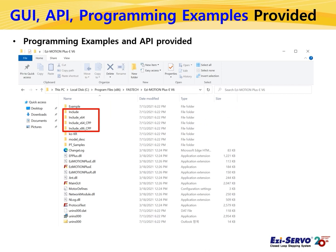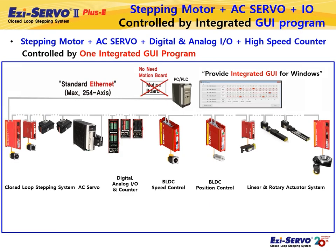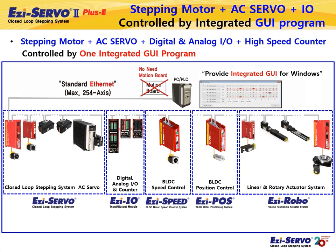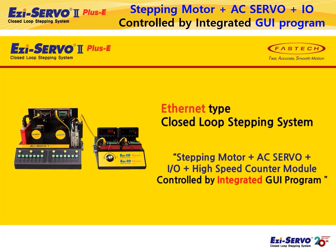For reference, 32-bit API of C Sharp is in the Include folder, 64-bit API of C Sharp is in the Include X64 folder, 32-bit API of C++ is in the Include X86 CPP folder, and 64-bit API of C++ is in the Include X64 CPP folder. In summary, for a single application — especially a small device — Fastek Ethernet products have a built-in motion controller, so a motion board is unnecessary. Using a standard Ethernet network, you can configure and control the entire machine through one Ethernet network, including stepping motors, servo motors, digital and analog IO modules, and high-speed counter modules. This is the meaning of the total solution.